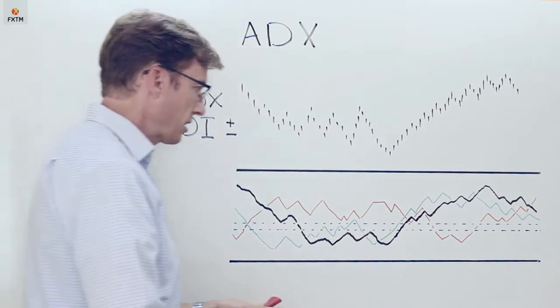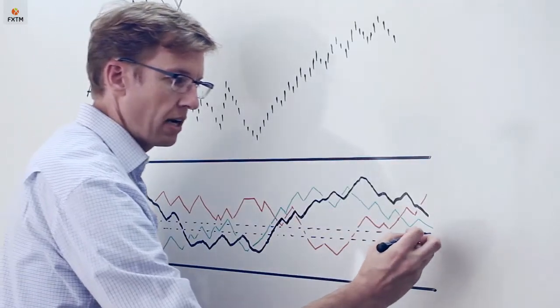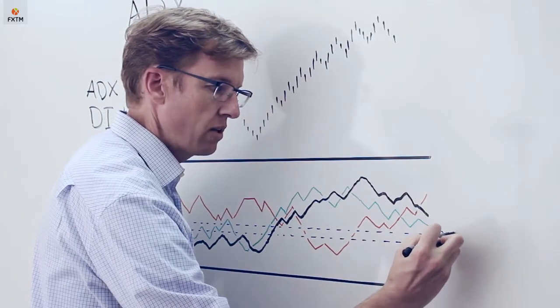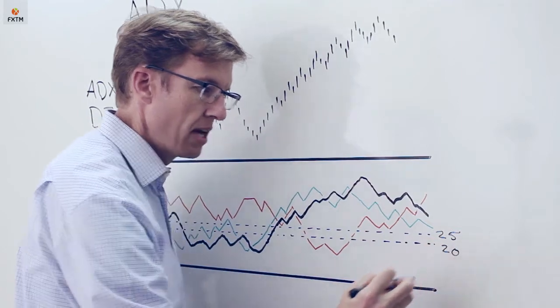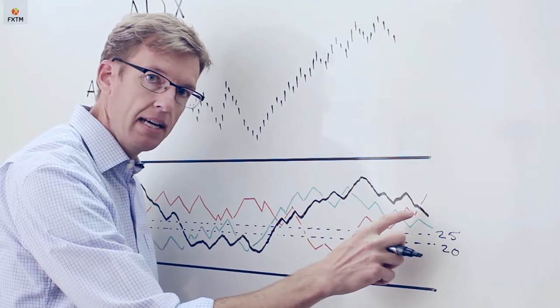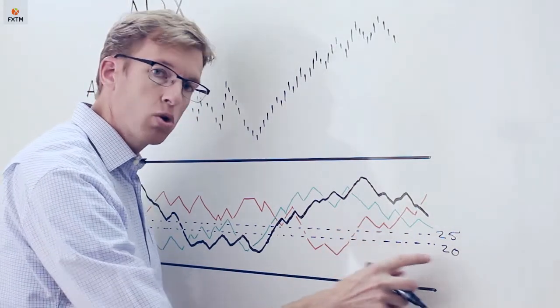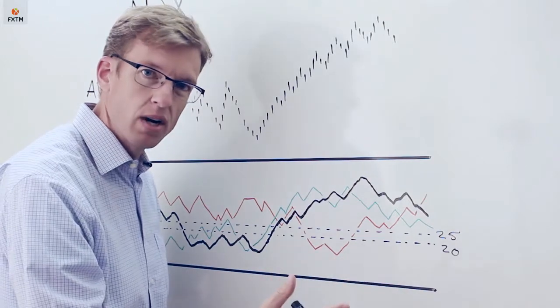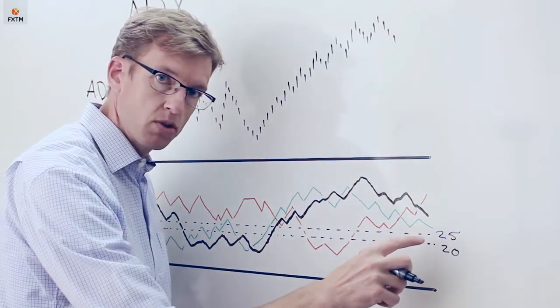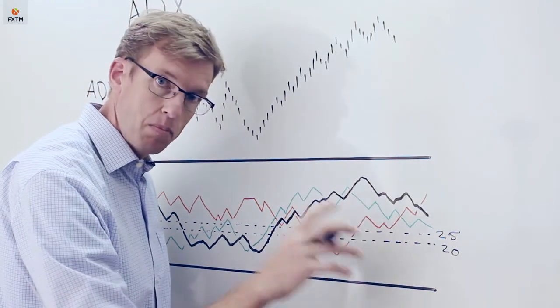Now the ADX line itself is going to move above or below a couple of lines that I've drawn here. I've just drawn a couple of horizontal lines here, one at 25 and one at 20. Now what we assume is that any time the ADX line is above 25, we're in a strong trend. If it's below 20, then we're in no trend environment. So we want to look for buying or shorting opportunities that are in favor of the trend when the ADX line is above 25.